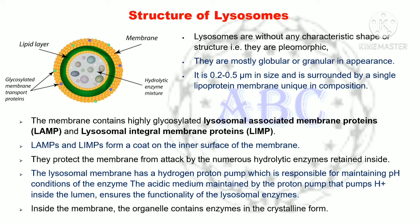The membrane contains highly glycosylated lysosomal-associated membrane proteins (LAMP) and lysosomal integral membrane proteins (LIMP). LAMPs and LIMPs form a coat on the inner surface of the membrane, protecting it from attack by the numerous hydrolytic enzymes inside. The lysosomal membrane has a hydrogen proton pump responsible for maintaining the pH conditions, and the acidic medium maintained by proton pumps pumping hydrogen ions inside the lumen ensures the functionality of the lysosomal enzymes.